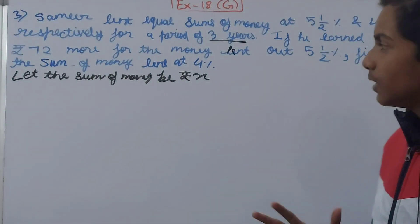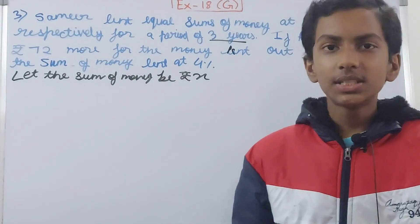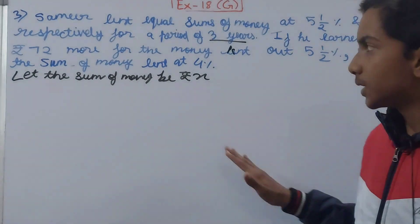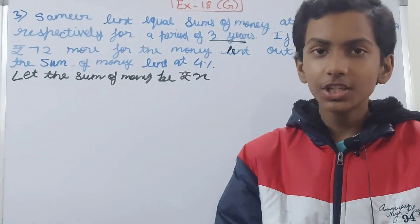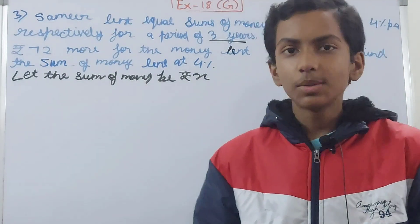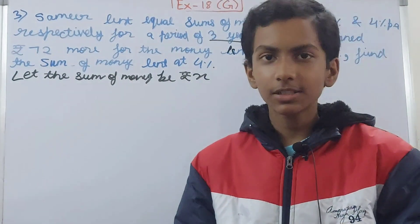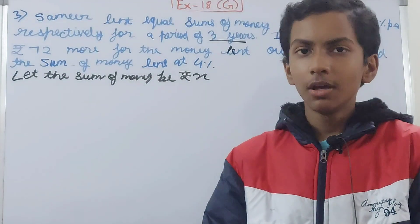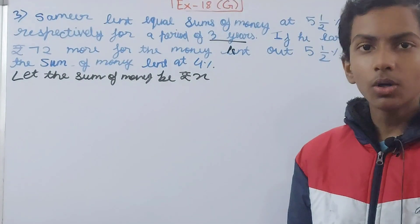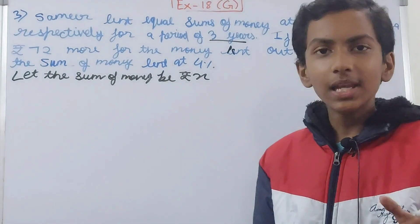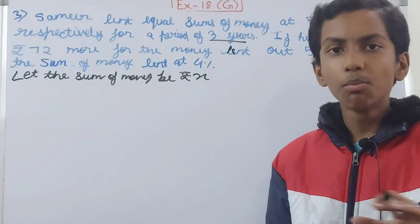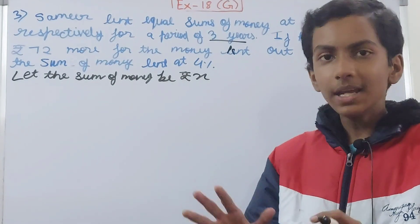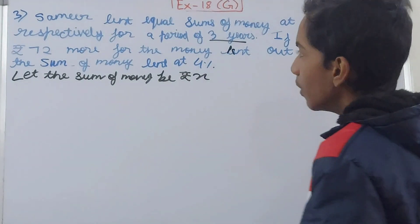He earned ₹72 more interest on the money lent at 5½%. The sum with the larger rate of interest will yield more interest. Between 4% and 5½%, the interest will clearly be more on the 5½% sum. So the difference in interest earned is ₹72.